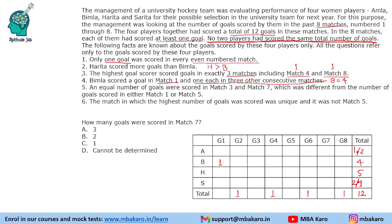Since Harita is the highest goal scorer, she scored goals in 3 matches including match 4 and match 8, scoring 1 goal each there, so no other person scores in those matches. For Bimla's 3 consecutive matches other than match 1, the only available consecutive matches are 5, 6 and 7 — scoring 1 goal each. So Bimla is done.